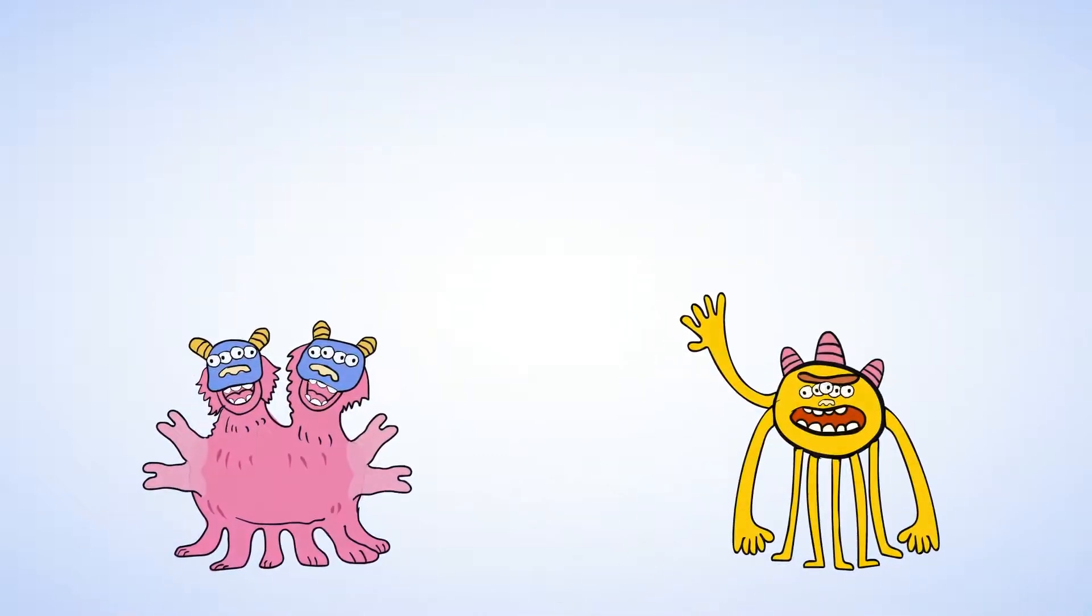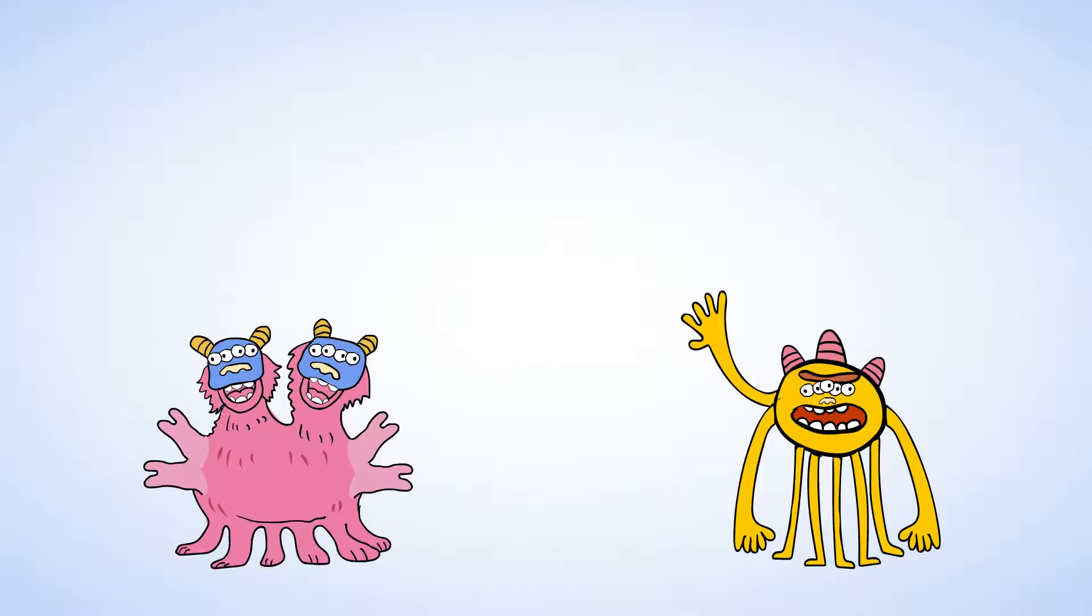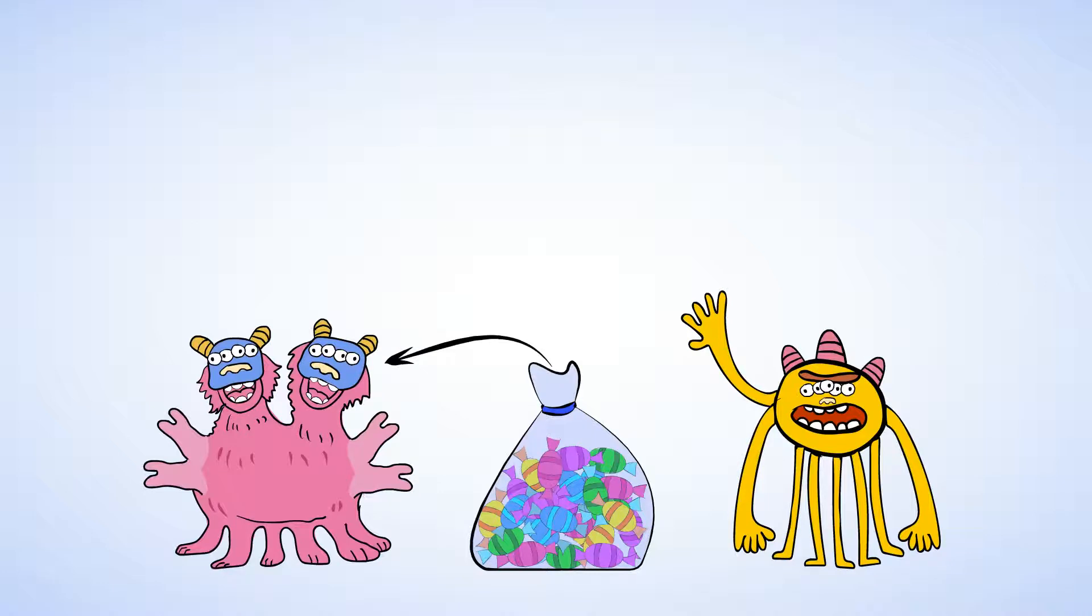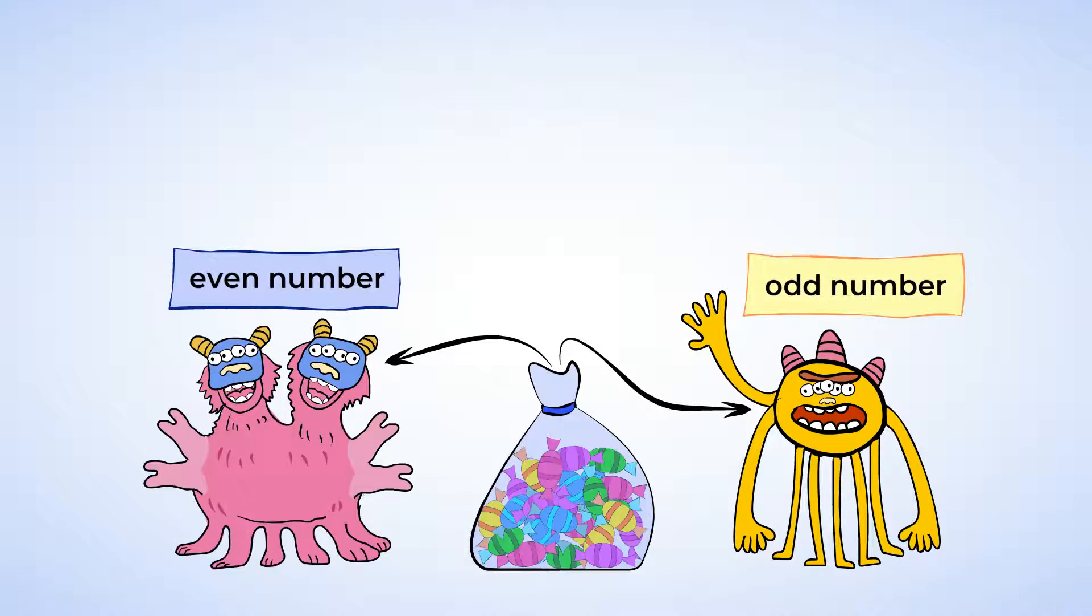Ah! Here come Even Steven and Odd Todd now. And it looks like they brought back a bag of candy that they're sharing. Even Steven only takes a piece of candy if there is an even number in the bag. And Odd Todd only takes a piece of candy if there's an odd number in the bag. Huh! What a surprise!